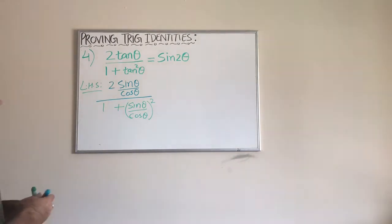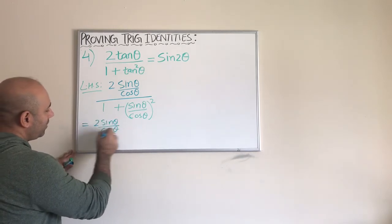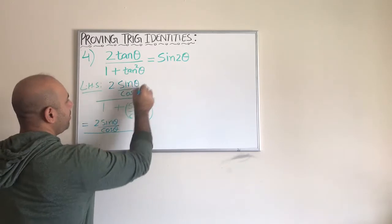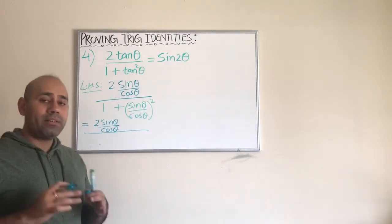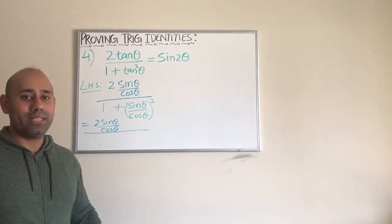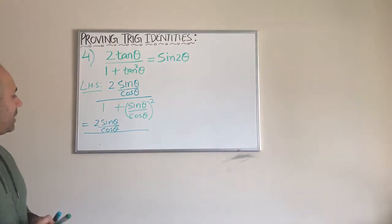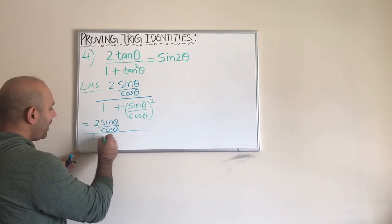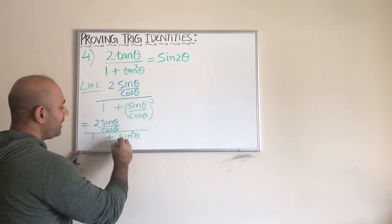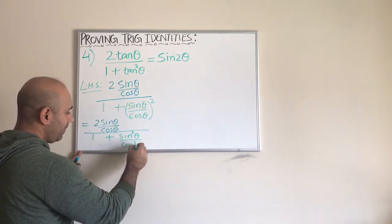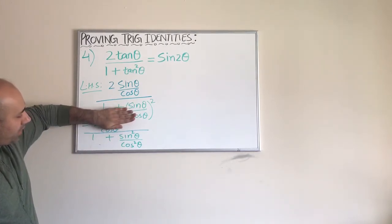From here we have two sine theta over cosine theta. There's not much room for simplification in the numerator piece, so we rewrite it. Writing all the steps is very important in proving identities. Now let's try to simplify the denominator. The denominator becomes one plus sine squared theta — because you have to distribute the square to both the numerator and denominator — divided by cosine squared theta.